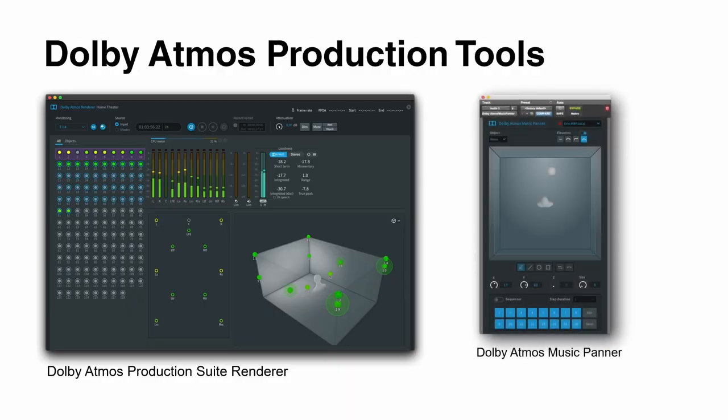All other applications that don't have built-in Dolby Atmos panning capabilities can make use of the Dolby Atmos Music Panner plugin, which comes with the Dolby Atmos production suite. So for instance, if you're working in Ableton Live, or in Reaper, or in Studio One, those DAWs can use Dolby Atmos by making use of the Dolby Atmos Music Panner plugin.